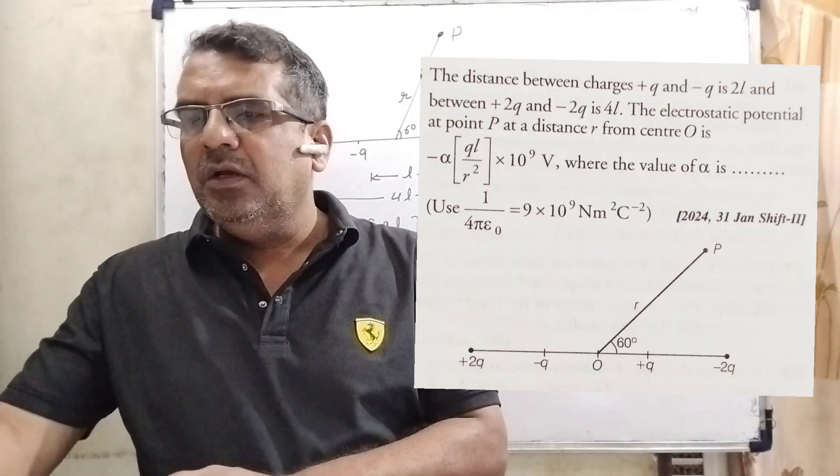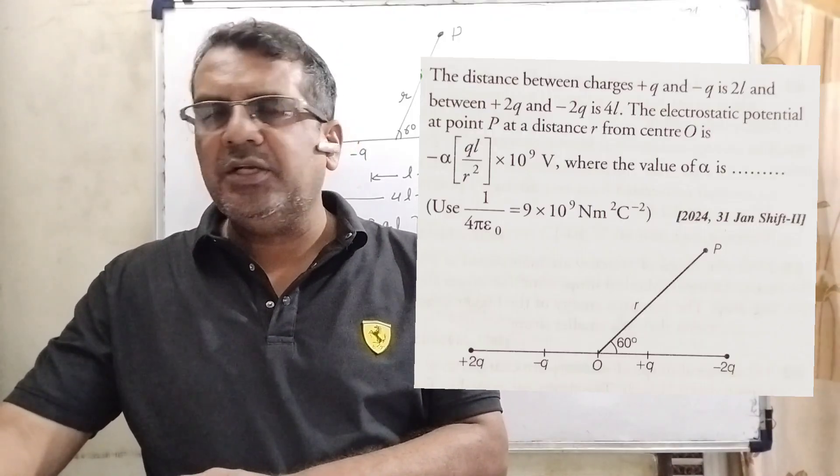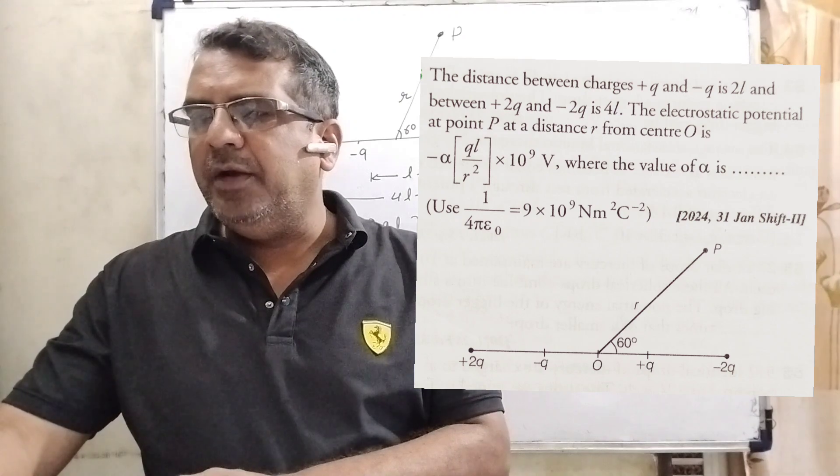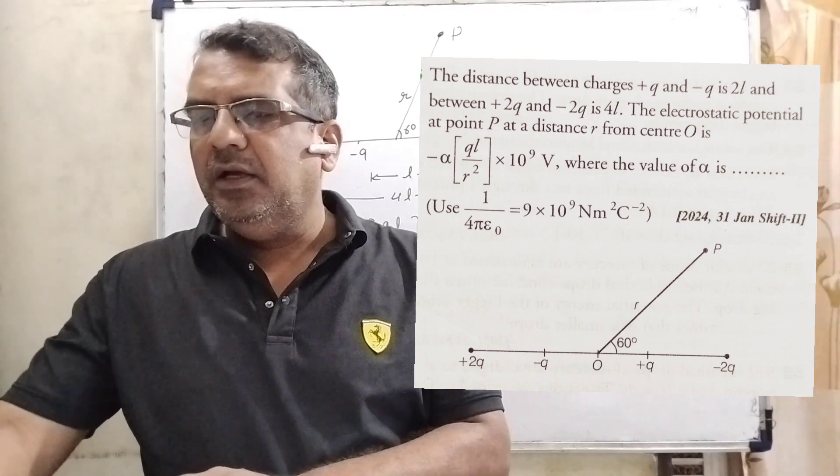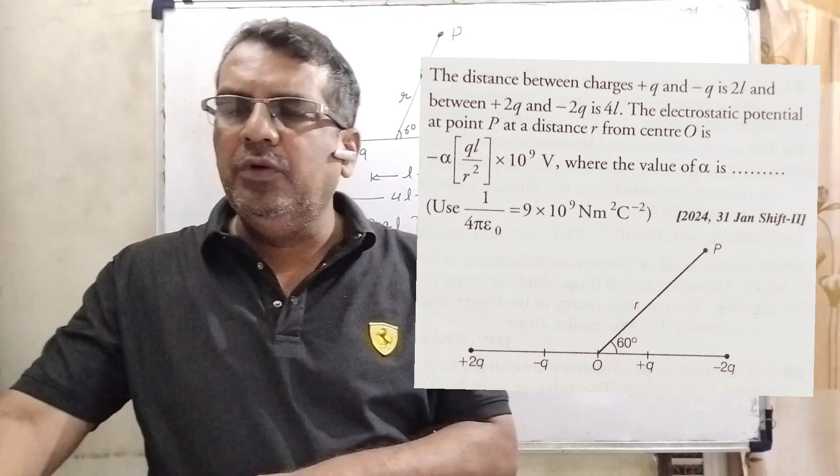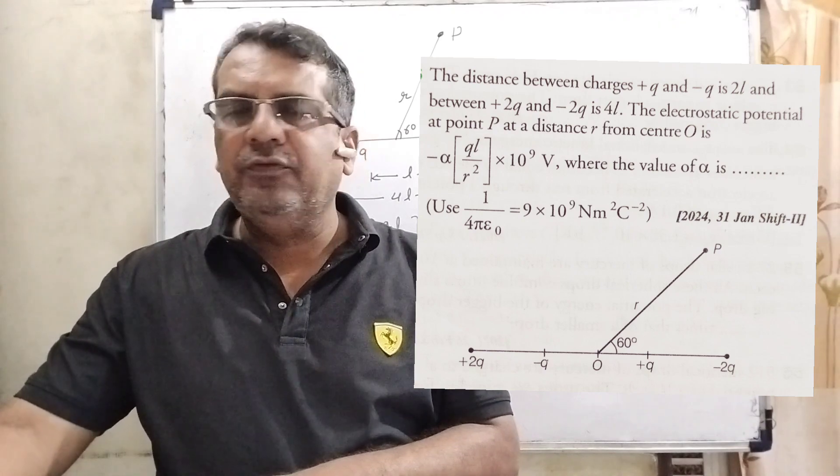Now here is the question. The distance between charges plus Q and minus Q is 2L and between plus 2Q and minus 2Q is 4L.